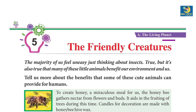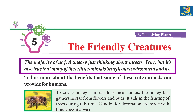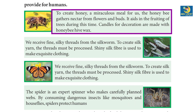Chapter 5: The Friendly Creatures. The majority of us feel uneasy just thinking about insects — but many of these little animals benefit our environment and us. Let's explore the benefits some of these animals can provide for humans. Number one: to create honey, a miraculous meal for us, the honeybee gathers nectar from flowers and buds.